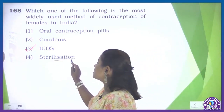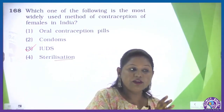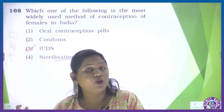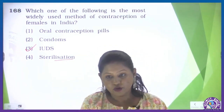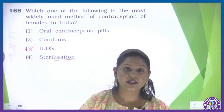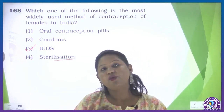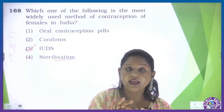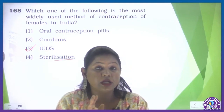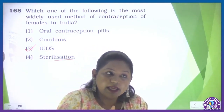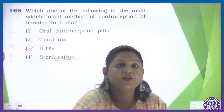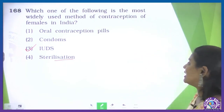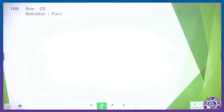Sterilization is done when someone has already done family planning and completed their family. It is not a reversible method — once sterilized, the person can never be fertile again. But this is not an ideal contraceptive for someone who may want to continue their fertile life later. So IUD is the most widely accepted method. The third option is correct.